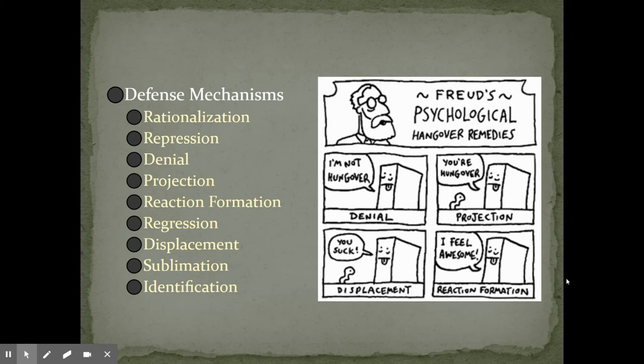The first is rationalization. Rationalization is when we attempt to justify our own poor behavior. Like, if somebody wasn't working very hard in school, it's, oh, it's because I'm tired, or maybe I don't need to, because I can always do this if I really wanted to. Repression is when we bury our poor memories deep down inside so that we can't think about them ever again. We know now today that repression is incredibly rare.